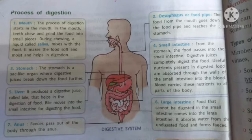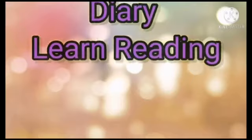Sixth is the large intestine. Food that cannot be digested in the small intestine comes into the large intestine. It absorbs water from the undigested food and forms faeces. The seventh and last organ is the anus. Faeces pass out of the body through the anus. Thank you.